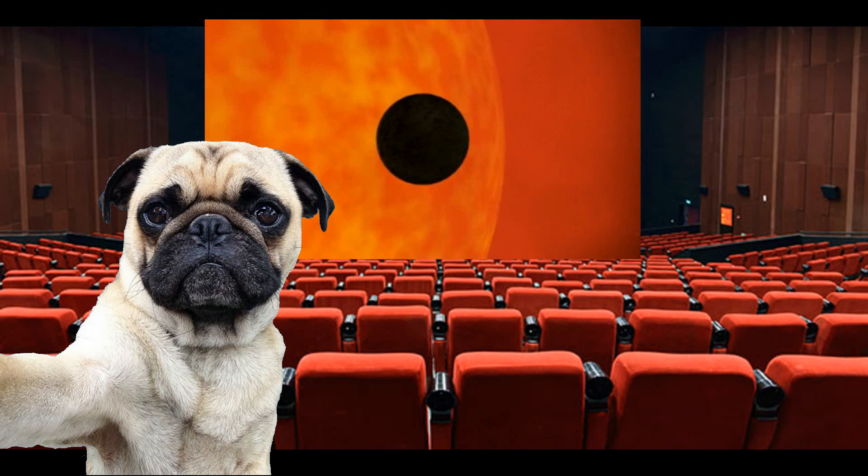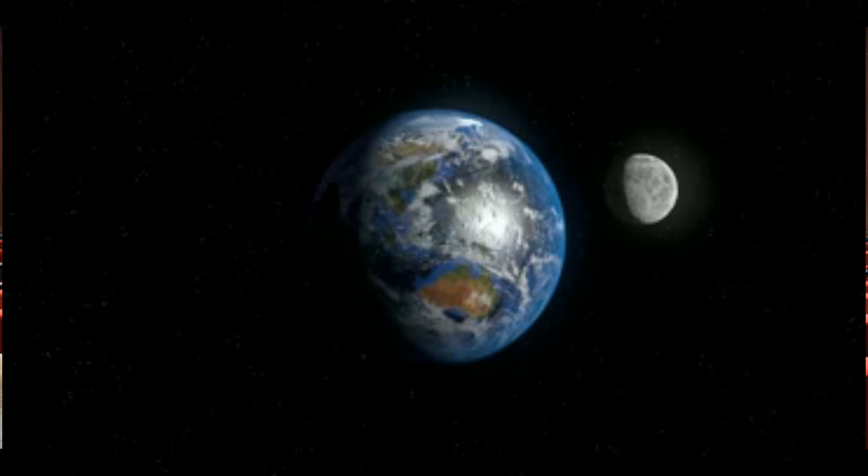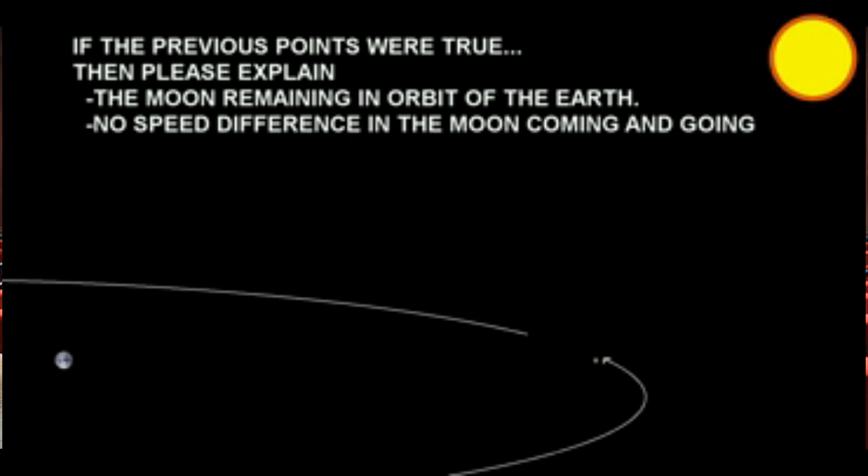So if we can agree on that, I'll move on to the Earth and the Moon. Hopefully we can understand that this picture here is the actual distance and size scaled to the Earth and the Moon. If the previous points were true, then can you please explain the Moon remaining in orbit of the Earth, and that there's no speed difference in the Moon coming and going? To begin, just like the marble in the previous image, wouldn't the Moon work the same way?